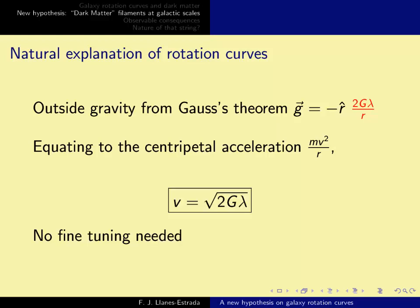We put both equations together, so 2G lambda over r is equal to mv squared over r, and we get that the velocity has to be the square root of twice Cavendish's constant times the linear mass density. And no fine-tuning is needed, it just falls off. Constant velocity suggests a cylindrical source.